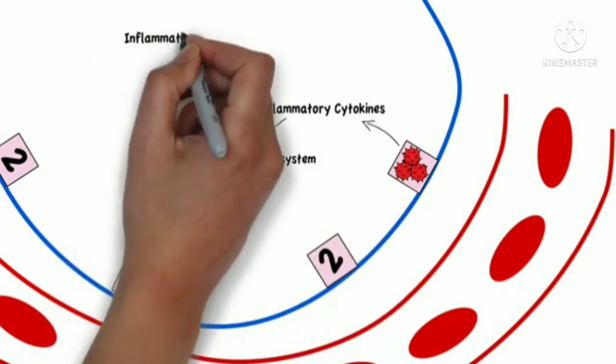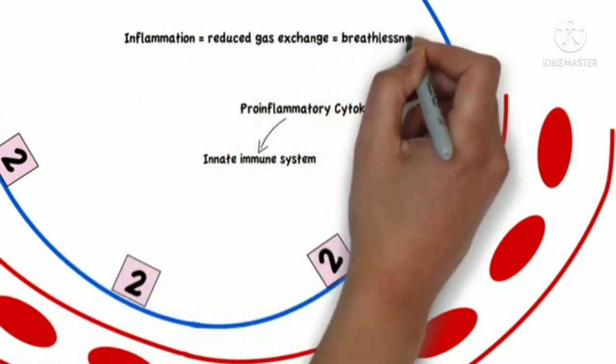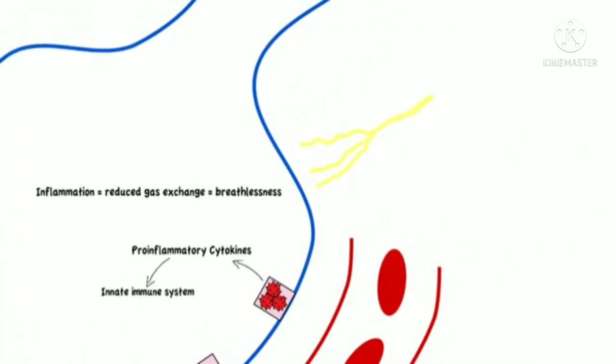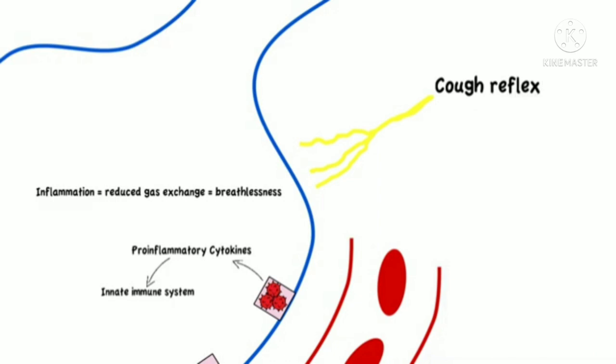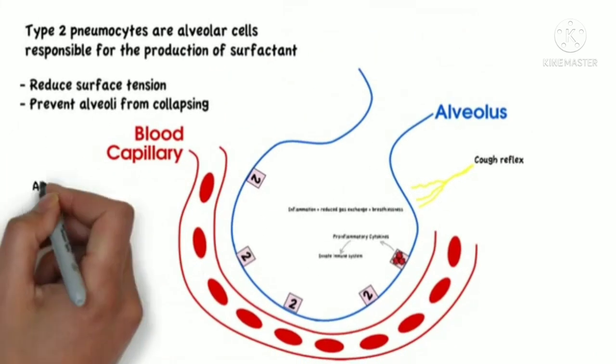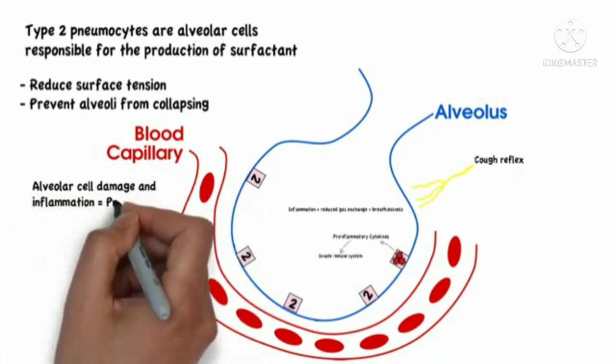Inflammation of the alveoli will reduce gas exchange, leading to the consequent feeling of breathlessness, and it will trigger nerve endings in the lungs to initiate the cough reflex. This alveolar cell damage and inflammation is also known as pneumonia.